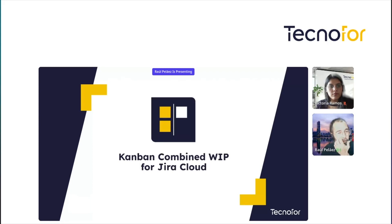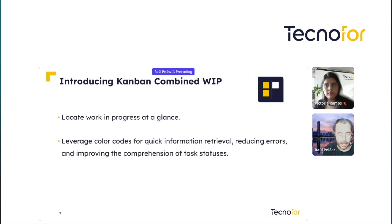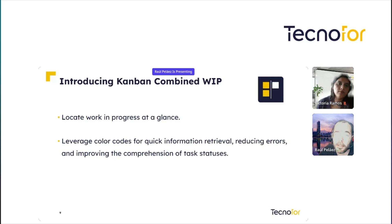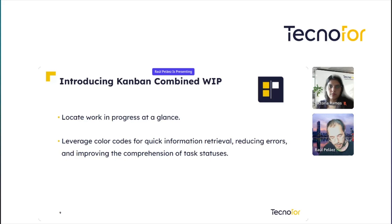Let's start with Kanban Combine WIP for Jira Cloud — this is our first plugin. With this plugin, you can locate work in progress at a glance and you can leverage color codes for quick information retrieval, reducing errors and improving the comprehension of task statuses.